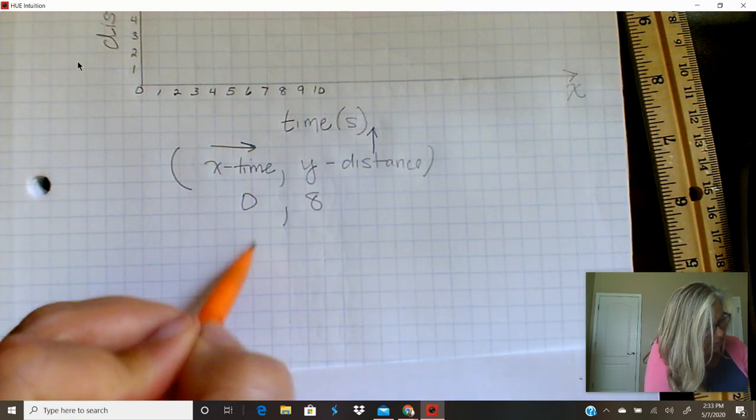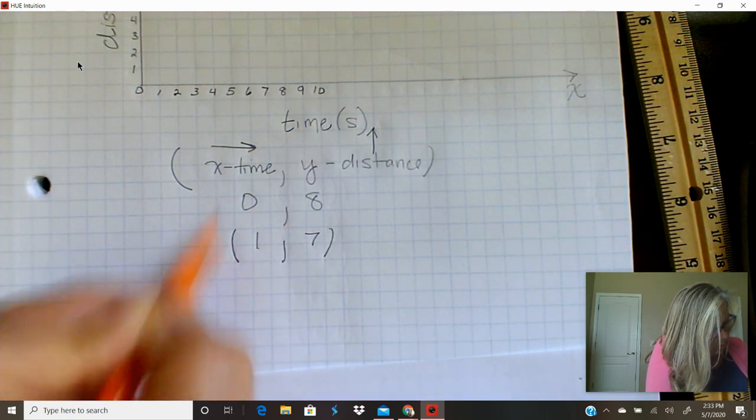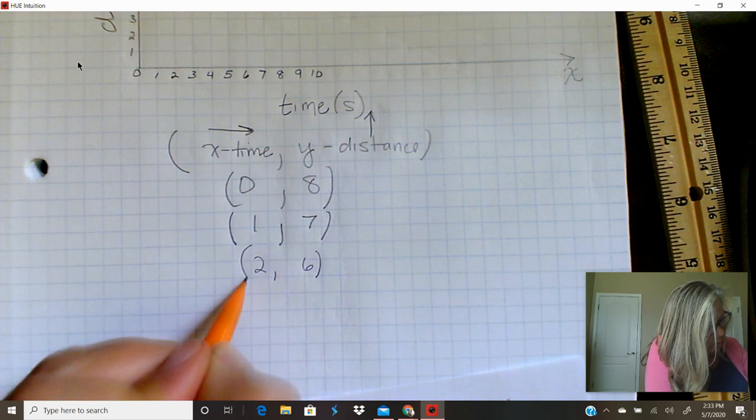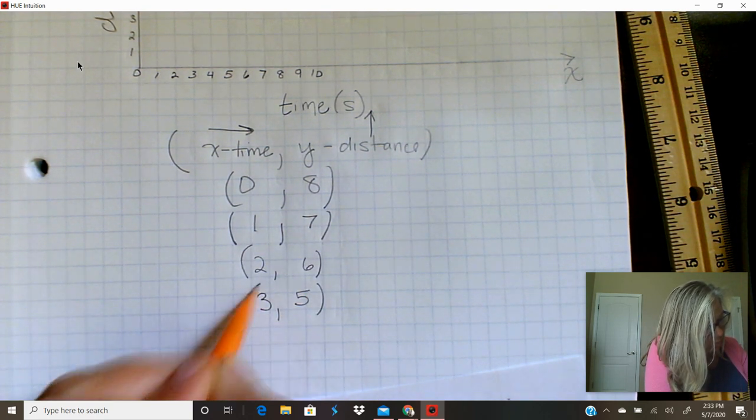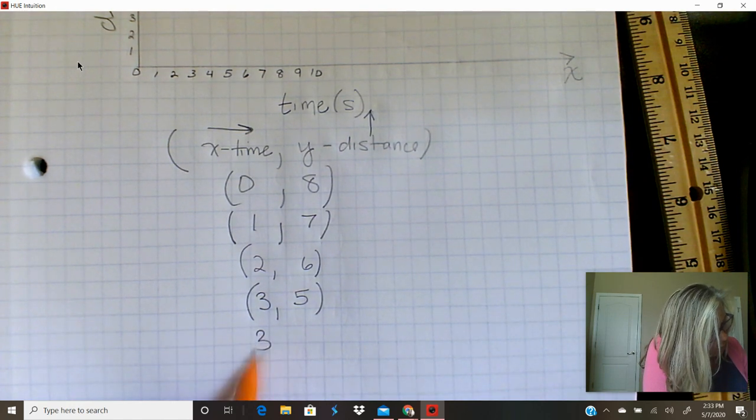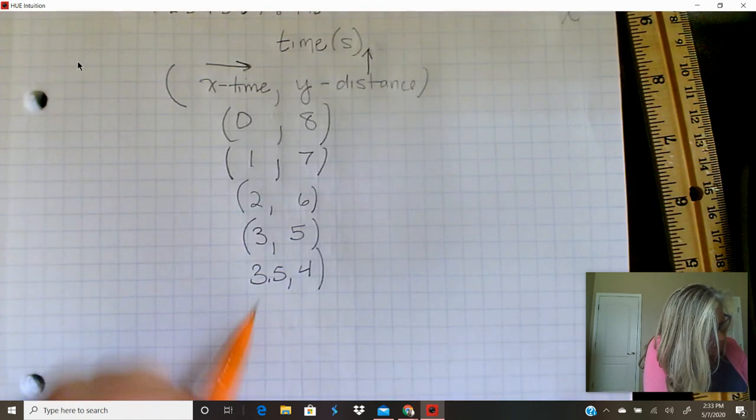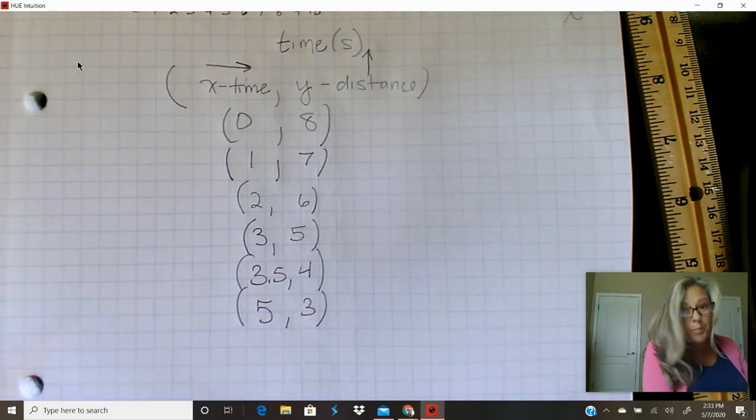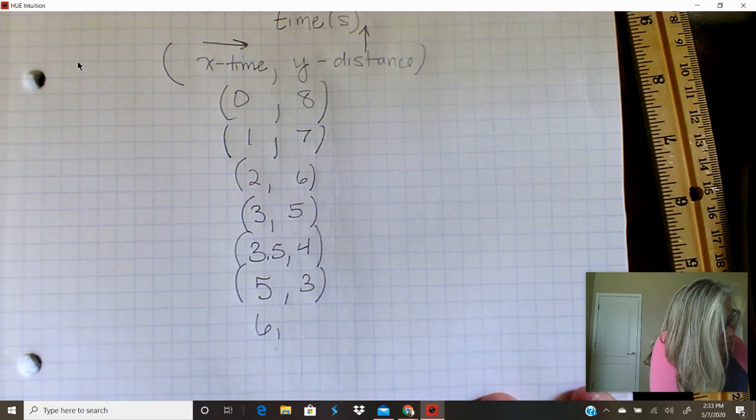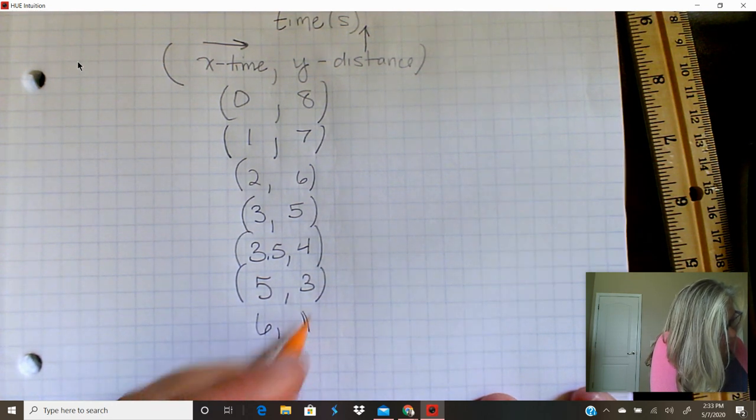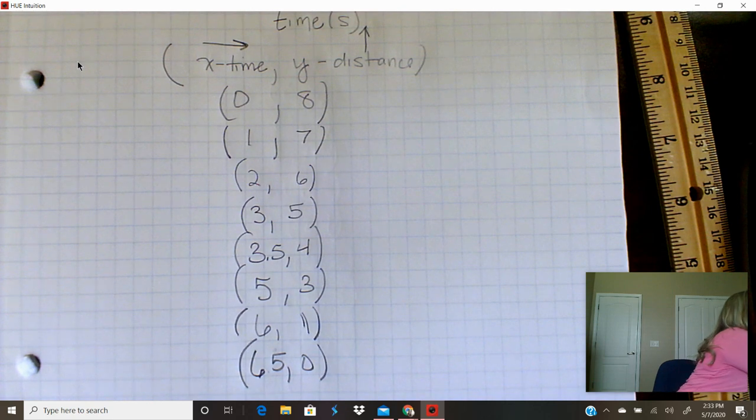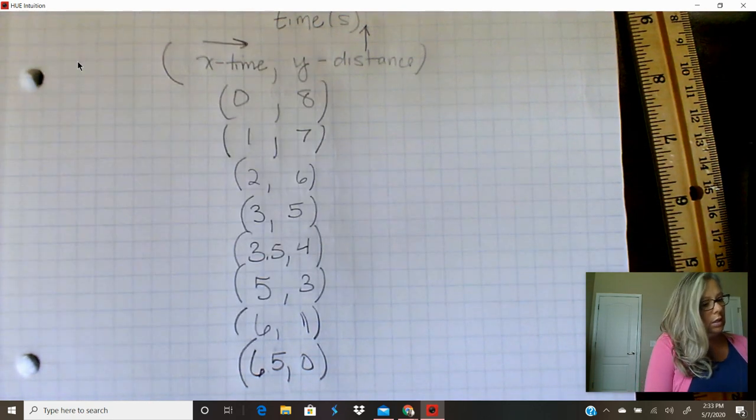My next coordinate is 1, 7. The coordinate after that is 2, 6, then 3, 5. Then it's 3.5, 4 and 4, 3—3.5 and 4 distance, 5 and 3 meters of distance. The next one is 6 and 1, 6 seconds. At 6 seconds, we were at the 1 meter mark. And at 6 and a half seconds, we were back to 0. Now that I have my ordered pairs, my coordinates, I can graph them.